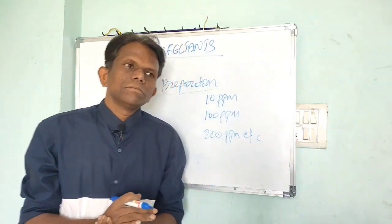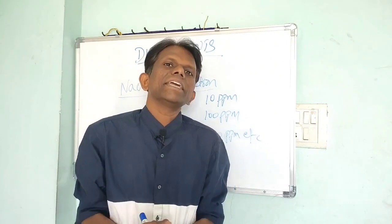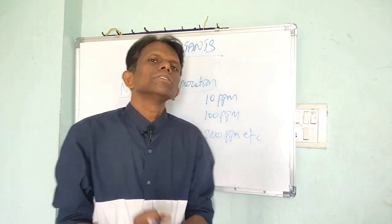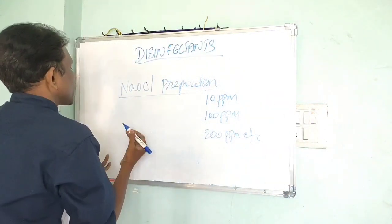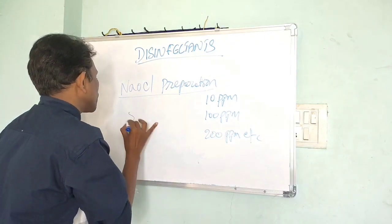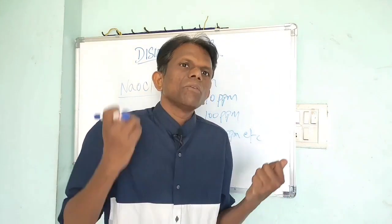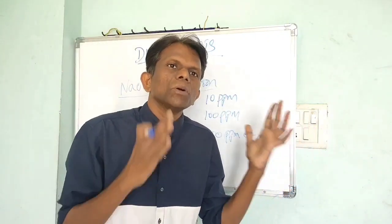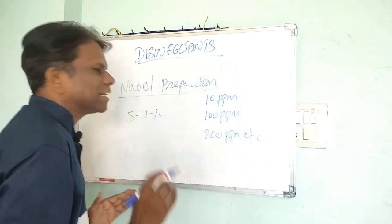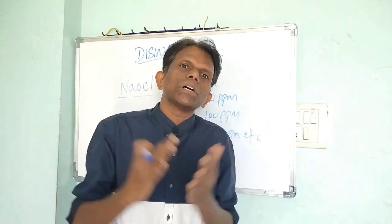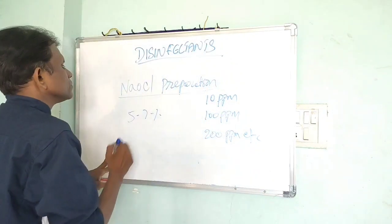In our country, most food processing industries use sodium hypochlorite as a disinfectant because it is highly reactive and cheaply available. When we receive the chlorine solution from suppliers — for example, if the specification is 5 to 7 percent — upon receiving every lot, we must collect samples and estimate in our in-house lab the exact percentage of chlorine in the tins using titrimetric method.